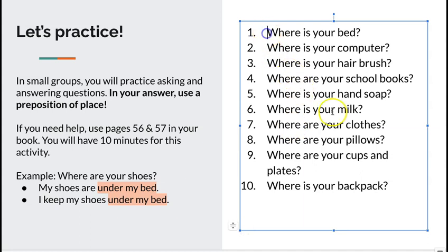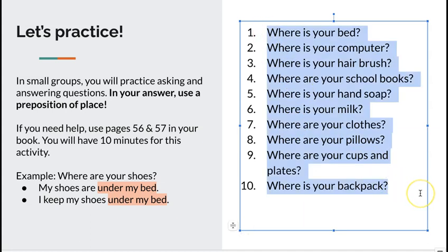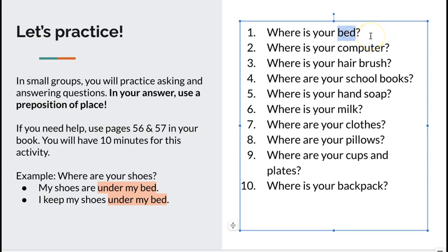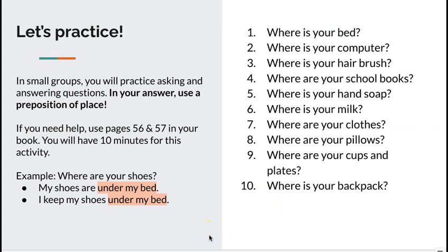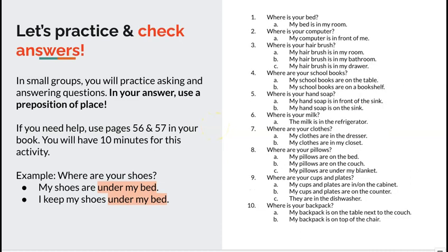Here you have ten different questions to practice asking and answering. For example: 'Where is your bed?' You can say 'My bed is in my bedroom' or 'My bed is in front of the dresser.' Please pause the video, write down these ten questions, and try answering them using different prepositions of place. If you need help, use pages 56 and 57 in your book. Here are some example answers — pause the video to see possible answers. You can have other answers, but these are examples you can study from.